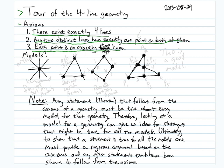Let's think about some models — what could possibly represent a geometry that has these three properties? My first thought was to draw four lines and put one point at the intersection. We certainly satisfy axiom 1 because there are four lines, and any two distinct lines have exactly one point on both of them. However, this model falls short: it does not satisfy axiom 3 because that central point is on four lines, not two. So this is not our model.